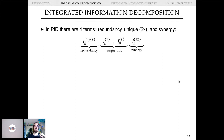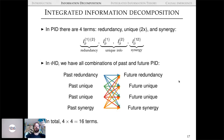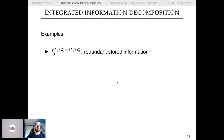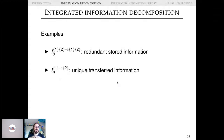In Φ-ID, we have all combinations of past and future PIDs — 16 total. For example, there's a redundant stored information: information redundantly shared between variables 1 and 2 in the past that remains redundantly shared in the future. There's also a unique planted information: information uniquely in variable 1 before that becomes unique to variable 2 in the future.